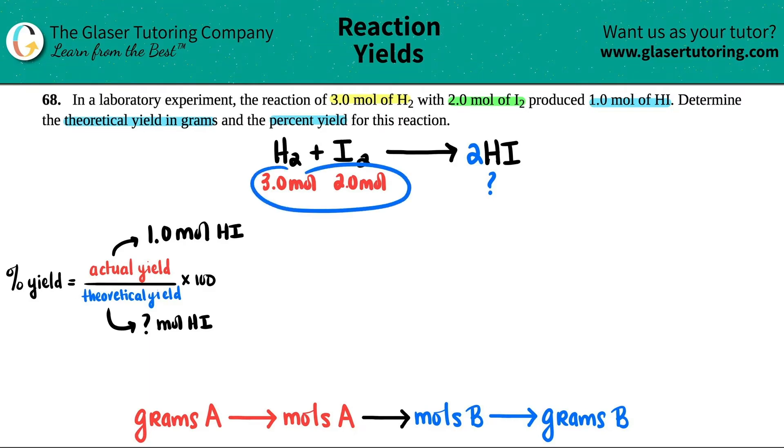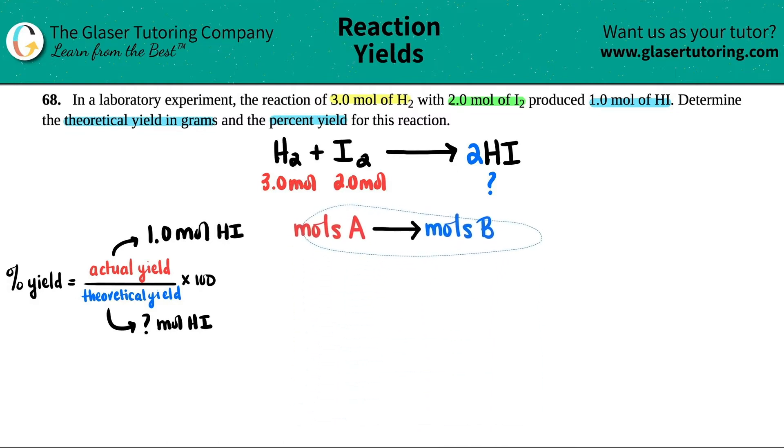Now, in this case, we're starting with moles. So in our little scheme of things here, which we've seen many times, we could get rid of the grams. We're starting with moles, so we're good. And basically we can just go to moles, because the answer here is in moles of HI. So this is an easy conversion. We just got to do it twice.